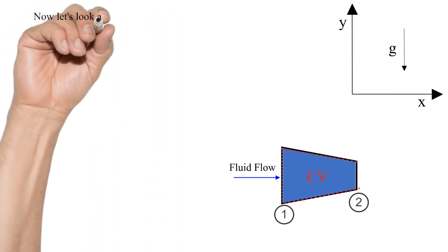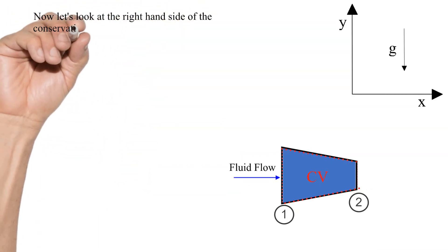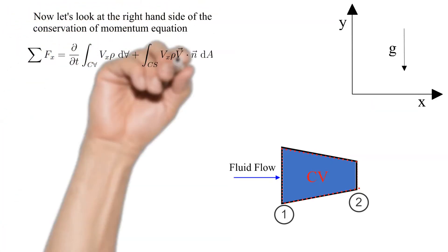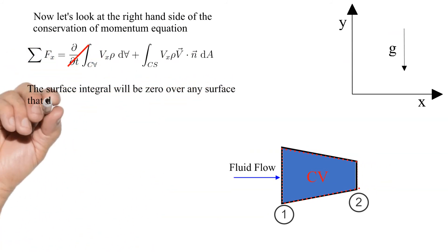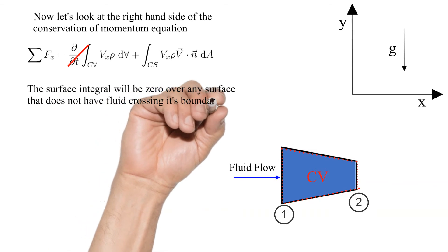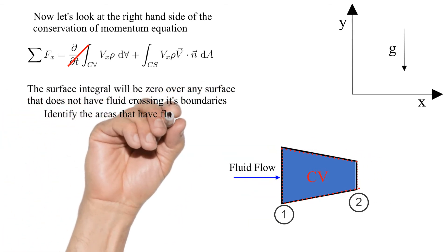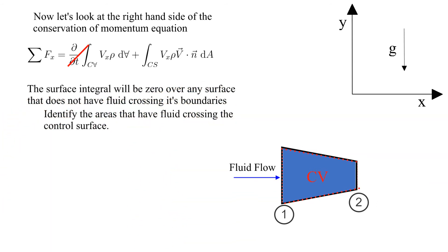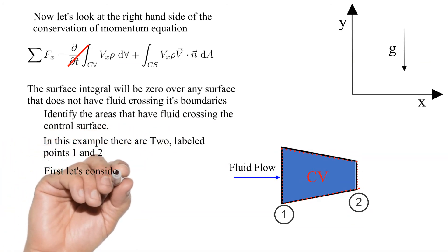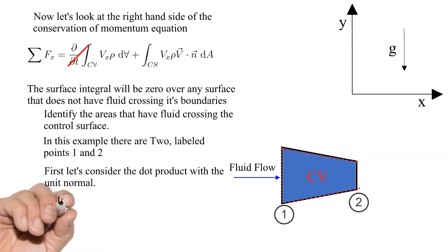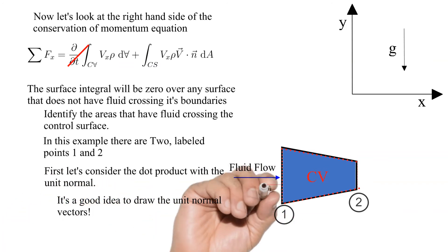Now let's look at the right hand side of the conservation of momentum equation. The surface integral will be zero over any surface that does not have fluid crossing its boundaries. Identify the areas that have fluid crossing the control surface. In this example there are two, labeled points 1 and 2. First let's consider the dot product with the unit normal. It's a good idea to draw the unit normal vectors.